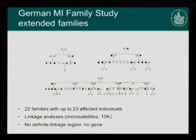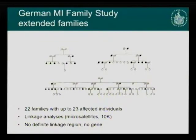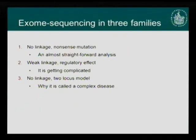That's why we now concentrate on looking at families with myocardial infarction. We have 22 families, some really large with up to 23 affected members. Some years ago we performed linkage analysis but these were not really successful, so in order to unravel the genetic cause in these families we have now started to sequence the exomes and genomes. During the last part of my talk I will show three examples of exome sequencing.